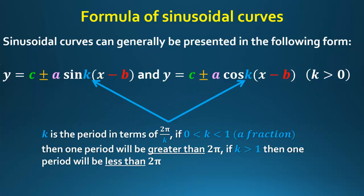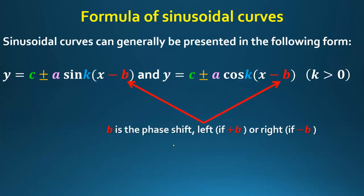The k value must multiply x directly. The period equals 2π/k — if k equals 4, the period is π/2, so a larger k gives a shorter period. If k is between 0 and 1 the period is greater than 2π; if k is greater than 1 the period is less than 2π. The b value is the phase shift: plus b shifts left, minus b shifts right.